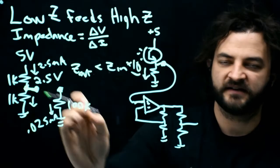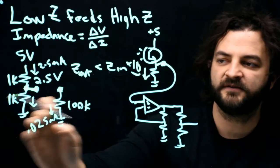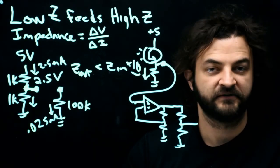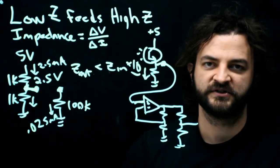If this was a 1k feeding a 10k, also good. 1k feeding 1k, well, two 1k resistors in parallel make a 500 ohm resistor, and that's going to drastically affect what that voltage is.